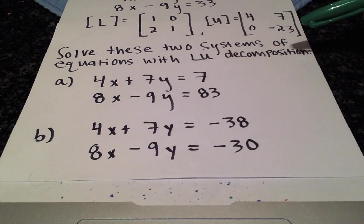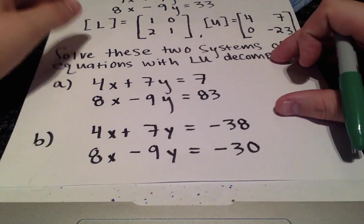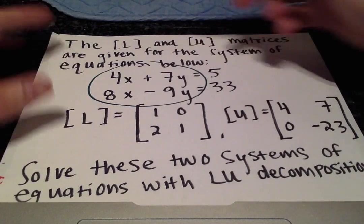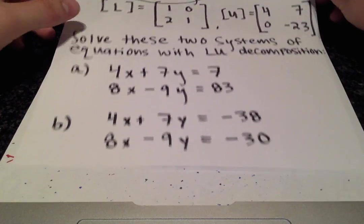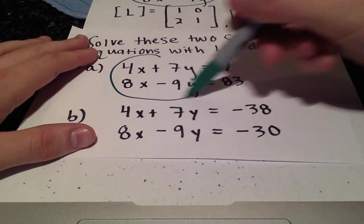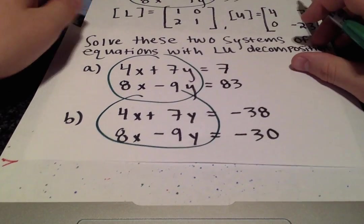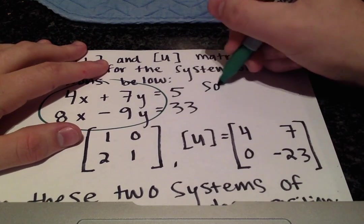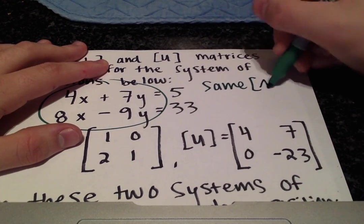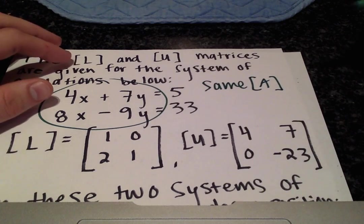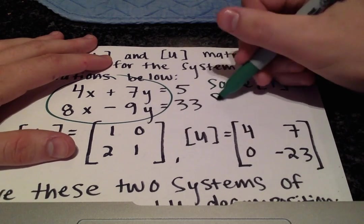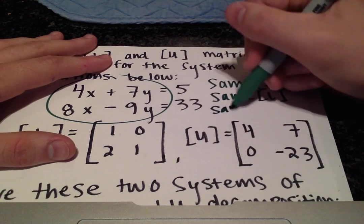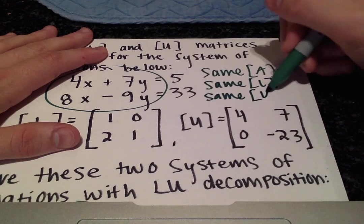When you're looking at all these, something should hit you and click right away. You should see that the left-hand side of all these system of equations are identical. That means we have the same A matrix, which also means we all have the same L matrix and the same U matrix.